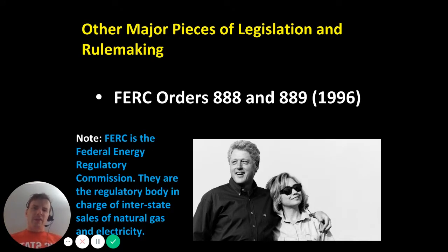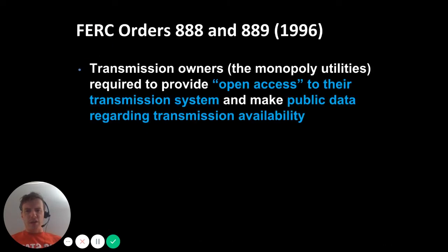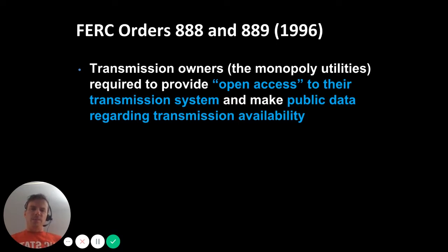Other major pieces of legislation: FERC Orders 888 and 889. FERC is the Federal Energy Regulatory Commission — a federal regulatory body in charge of interstate sales of natural gas and electricity. These orders had to do directly with the operation of high-voltage transmission lines delivering electricity across state lines. What these orders required is that transmission owners — the monopoly utilities, the incumbents — were now required to provide open access to their transmission system and make public data regarding transmission availability.